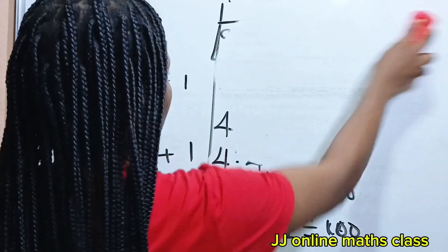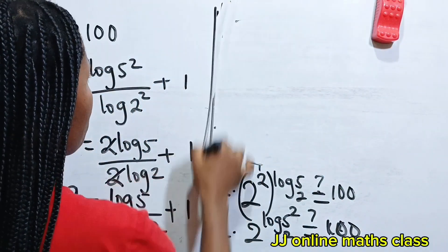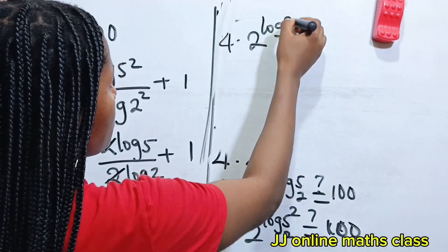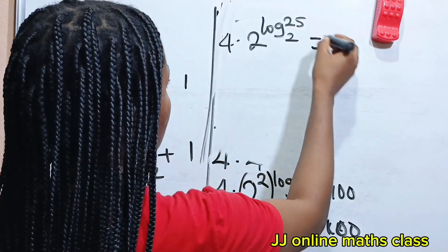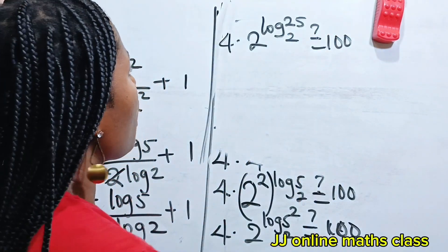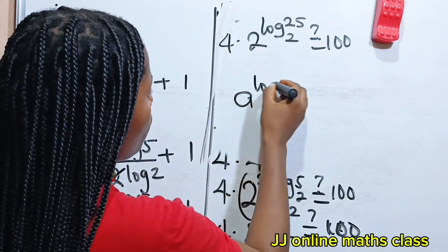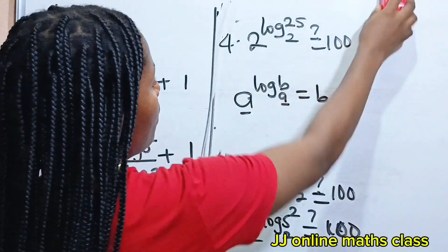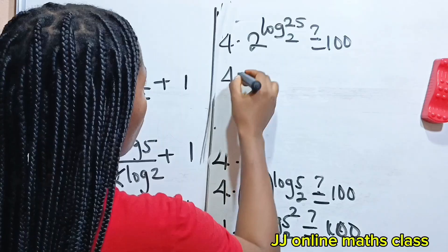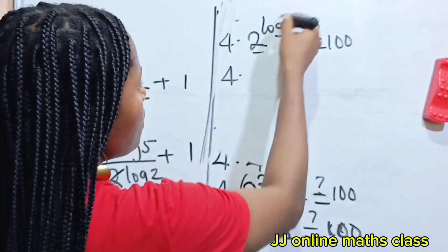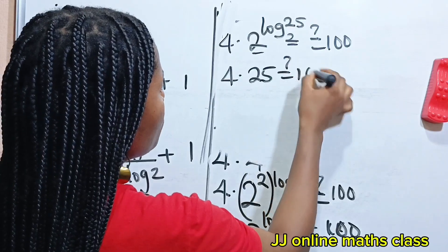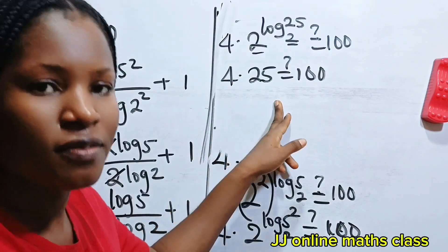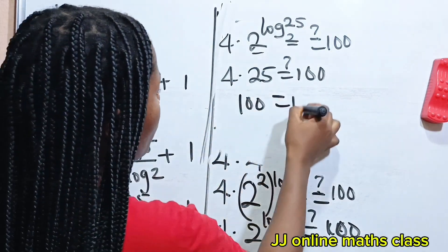So we have 4 multiplied by 2 raised to the power of log 25 base 2. Now recall that when you have A to the power of log B base A, they share the same base, and this is equal to B. That means 2 to the power of log 25 base 2 is 25. So we have 4 multiplied by 25, which equals 100. And that proves that the answer we got is correct.